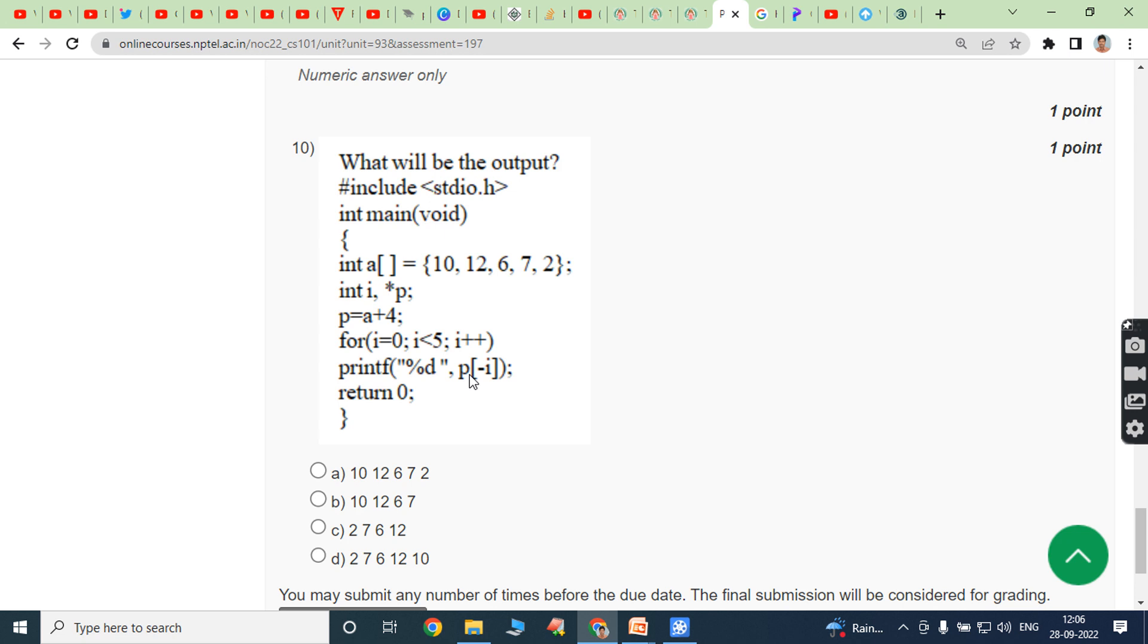Whenever p of minus i is given, the array elements are printed in reverse order. The negative index is used for printing the array elements in reverse order. So that is 2, 7, 6, 10... 2, 7, 6, 12, 10. Answer is option D.